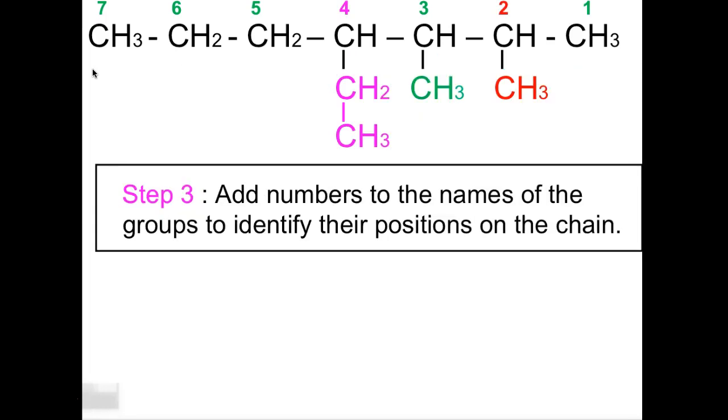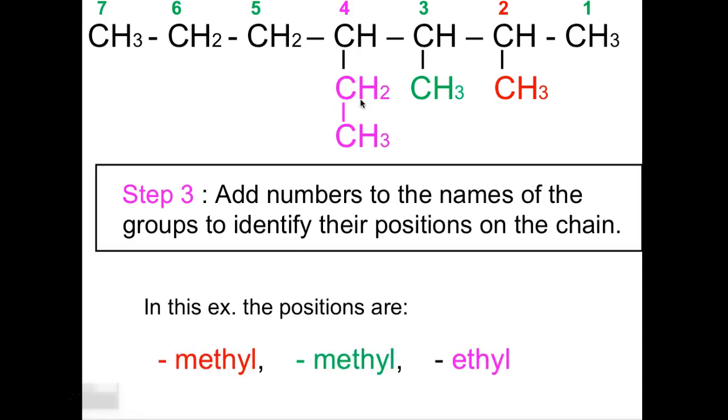So now we're going to add numbers to the names of the groups to identify their positions in the chain. So this group two is going to be a meth. This group three is going to be a meth. And this group four is going to be an eth. So in this example, the positions are methyl, methyl, and ethyl as we go from right to left.